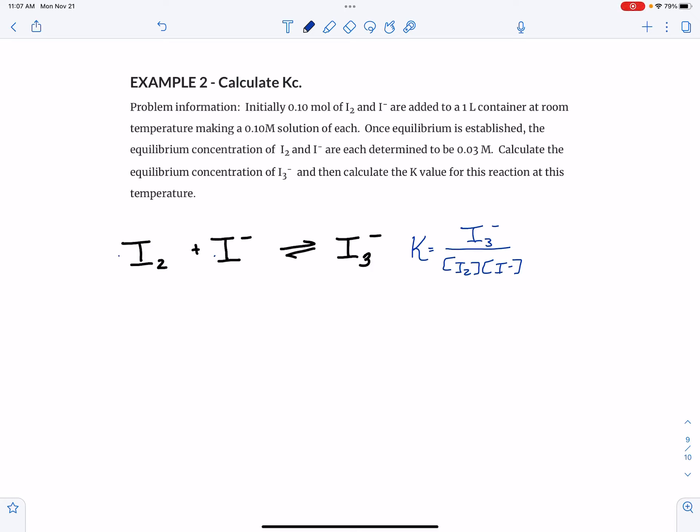So this problem is very similar in that it's got the same initial amount and what's different is that we've been given the equilibrium of not this one but of both of these. So that's the other style of setup with this. So let's see how that one turns out.